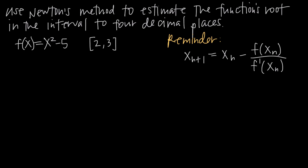In this particular problem we've been given the function f(x) = x² - 5. We've been asked to look for a root inside the interval x = 2 to x = 3, and we're going to be using Newton's method to estimate it. The Newton's method formula is: x sub(n+1) = x sub(n) minus f of x sub(n) divided by f prime of x sub(n).